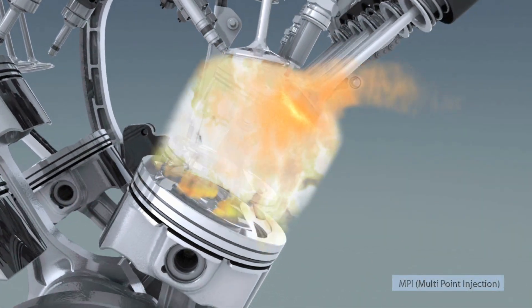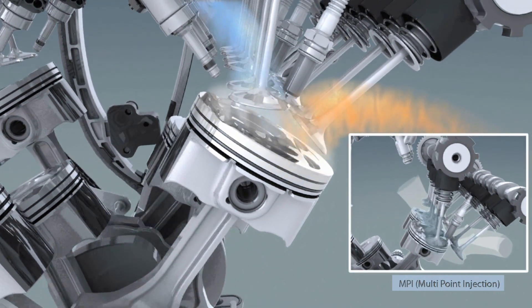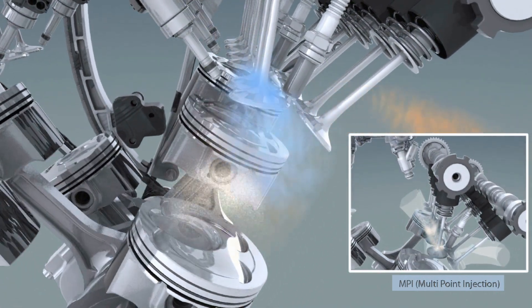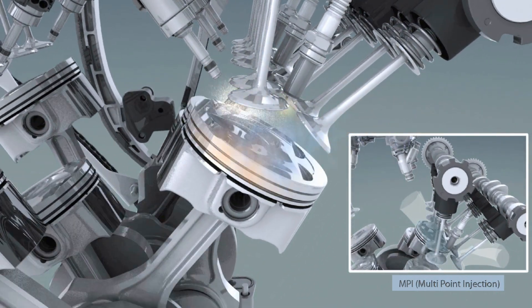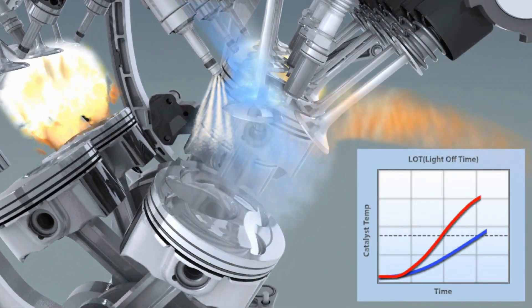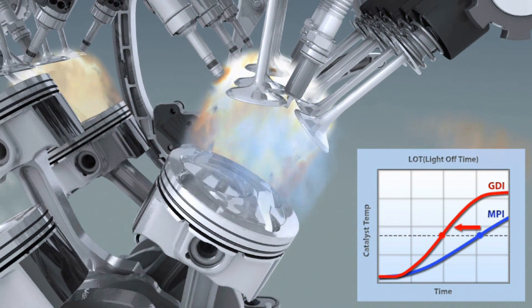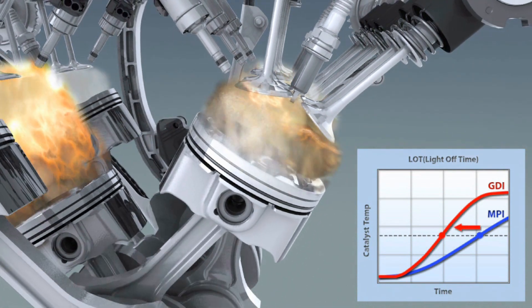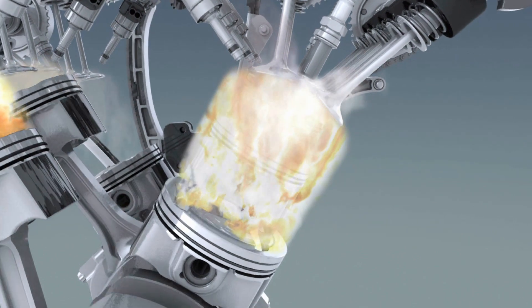Current MPI systems inject fuel into the intake port. The stratified fuel around the spark plug improves startability by enhancing combustion stability. Split injection increases exhaust energy and shortens the catalyst to light off time. Exhaust gas emissions are thus reduced.